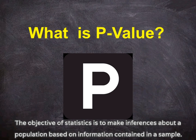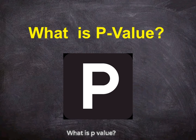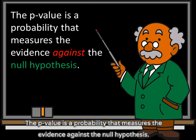The objective of statistics is to make inferences about a population based on information contained in a sample. One of the most important concepts in statistics is the meaning of p-value. What is p-value? The p-value is the smallest level of significance, alpha, that would lead to rejection of the null hypothesis with the given data. The p-value is a probability that measures the evidence against the null hypothesis.